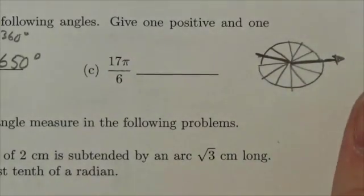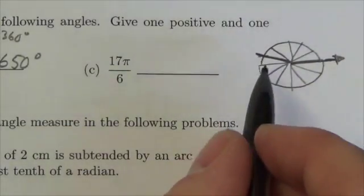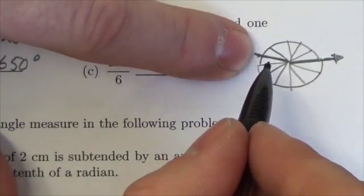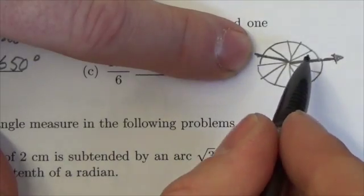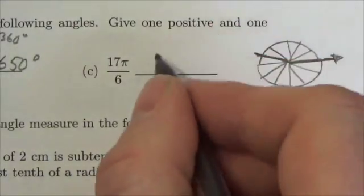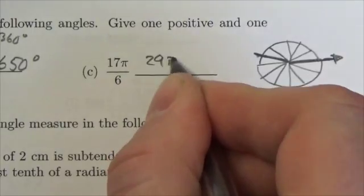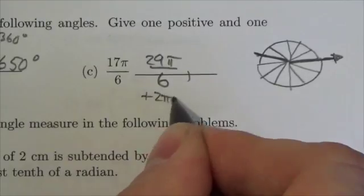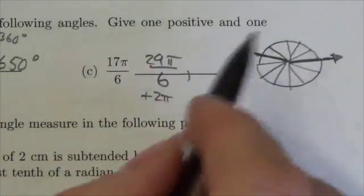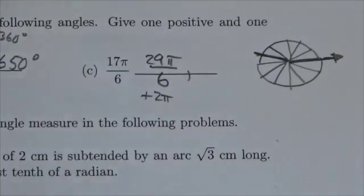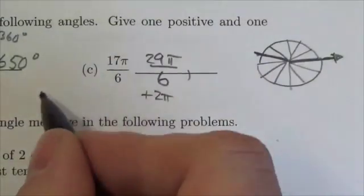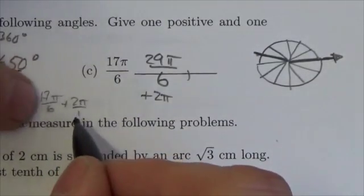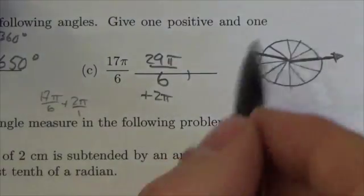Now, if I want a positive coterminal angle, what I could do to this is add another rotation. So 17, 18, 19, 20, 21, 22, 23, 24, 25, 26, 27, 28, 29. And I could get 29π over 6 by simply adding a rotation or 2π to that. But all I'm doing is counting it out. I think instead of doing this kind of a calculation, instead of going 17π over 6 plus 2π, which is 2π over 1, finding common denominators and then adding them together, just count it out.